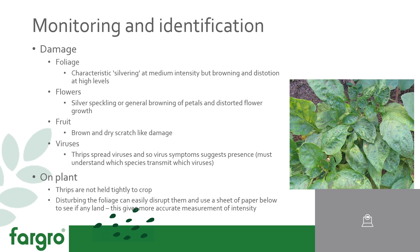If you look at your crop and see the symptoms, it suggests thrips. The image on the right shows a tomato plant with Tomato Spotted Wilt Virus, which is spread by thrips. On crop walks, one way to observe them on the plant is to disturb the foliage with your hand or a pen and put a sheet of paper below to see what falls onto it — thrips will generally fall out, giving you a good idea of the intensity of the infection.